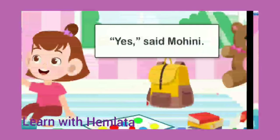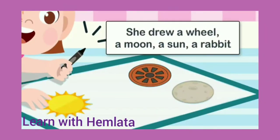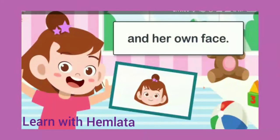Yes, said Mohini — yes grandma, I can do all the things with the circle. She drew a wheel — joh bicycle mein use hota hai — a moon, a sun, and a rabbit. She drew a moon that shines at night, a sun that shines during the day, a rabbit, a wheel, and her own face. Kyunki hamara face bhi circle ki tarah gol hota hai, toh usne apna face bhi draw kiya.